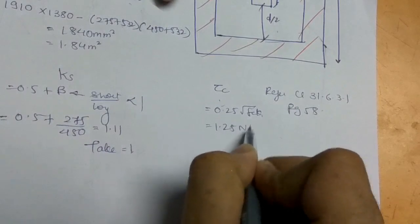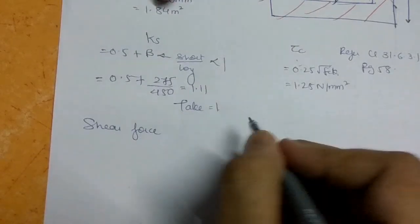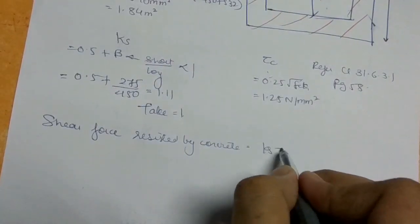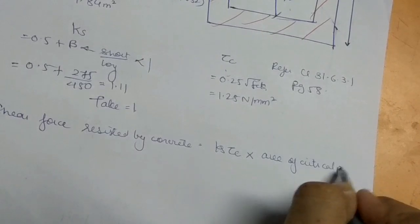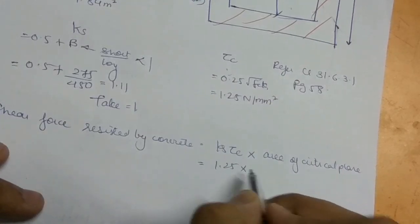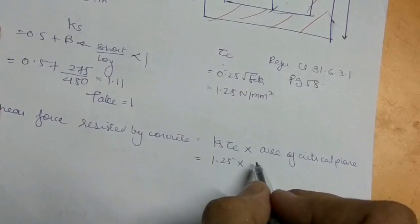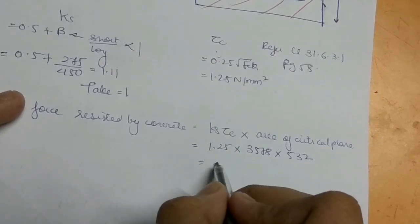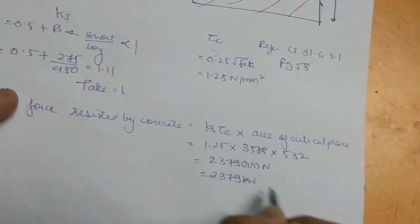The shear force resisted by concrete equals the permissible stress ks × τc multiplied by the area of the critical plane. The area of the critical plane is the perimeter times the effective depth: 3578 × 532. This gives 1.25 × 3578 × 532 = 2,379,000 N, which is 2379 kN. Call this VUC.